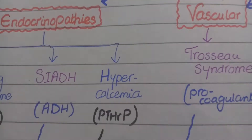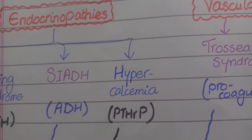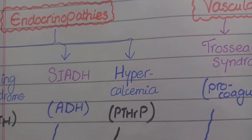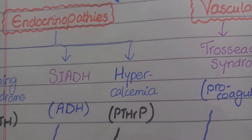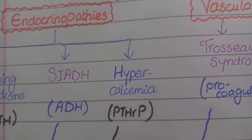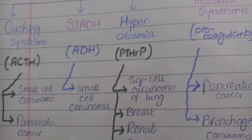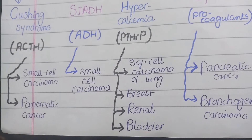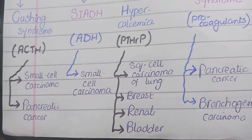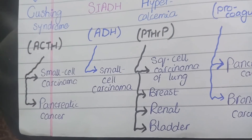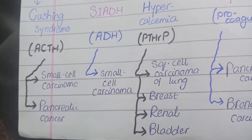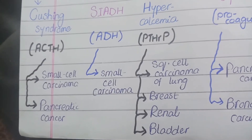The third endocrine-related paraneoplastic syndrome is hypercalcemia, which occurs due to release of parathyroid hormone-related protein. This protein is released in squamous cell carcinoma of the lung, breast cancer, renal cancer, and bladder cancer — that is, squamous cell carcinoma of the lung, breast carcinoma, renal carcinoma, and bladder carcinoma.